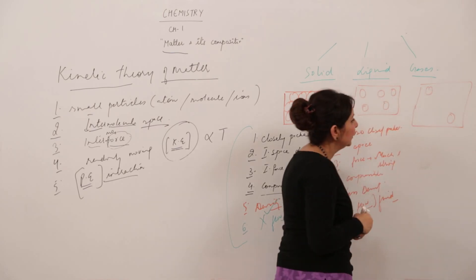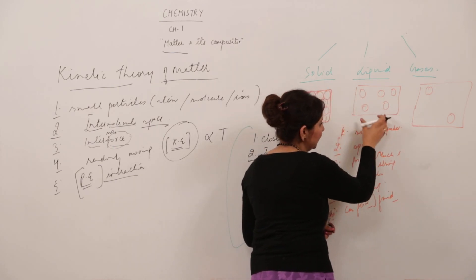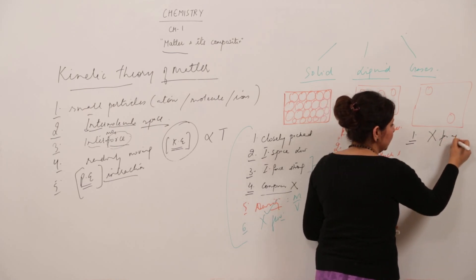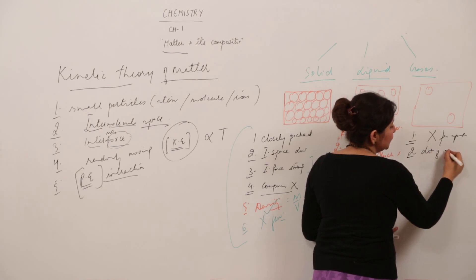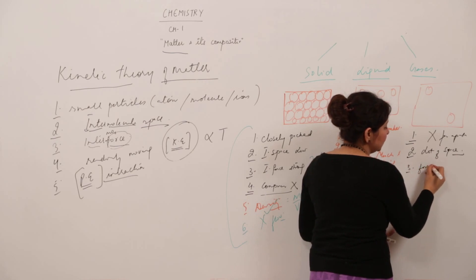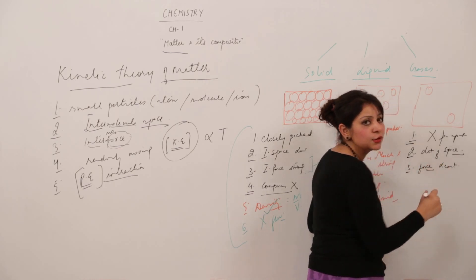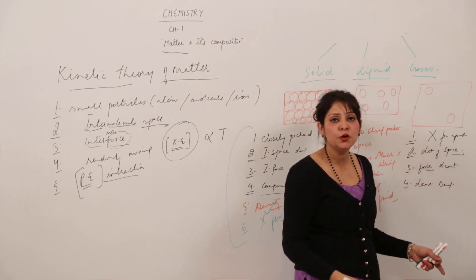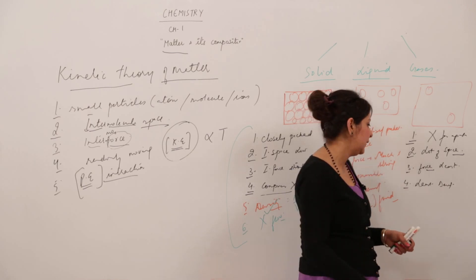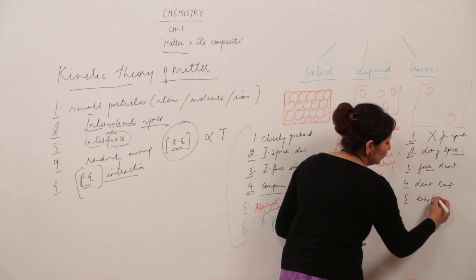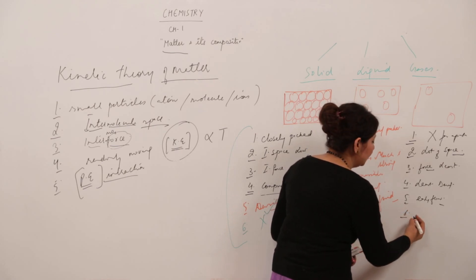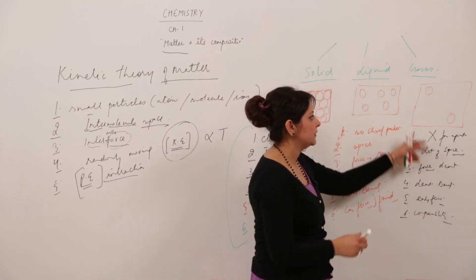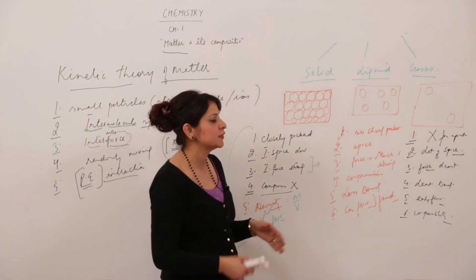In gas, there are only very few atoms in a given volume — they are far apart. The intermolecular space is maximum and the intermolecular forces are least; there is almost no force of attraction, which is why they move away from each other. Density is the least because very few molecules are present per unit volume. They can easily flow, and since the intermolecular space is maximum, the compressibility is also maximum.